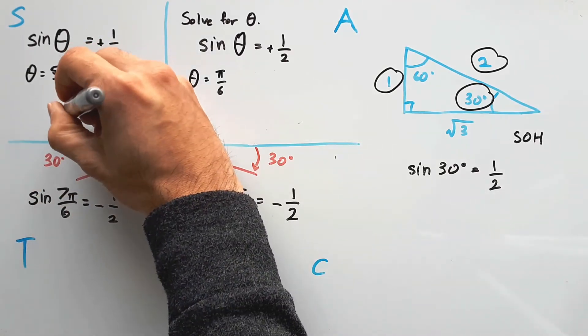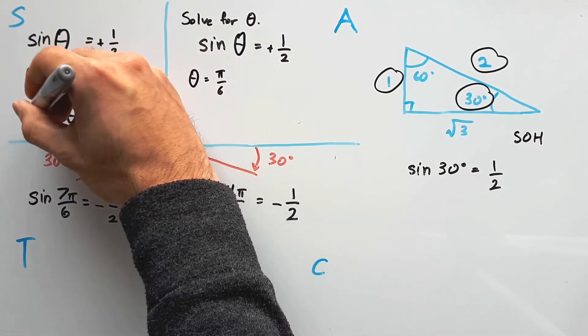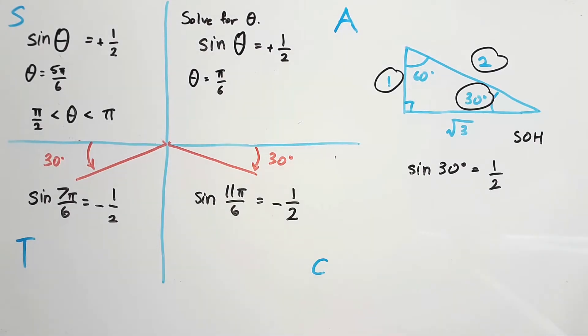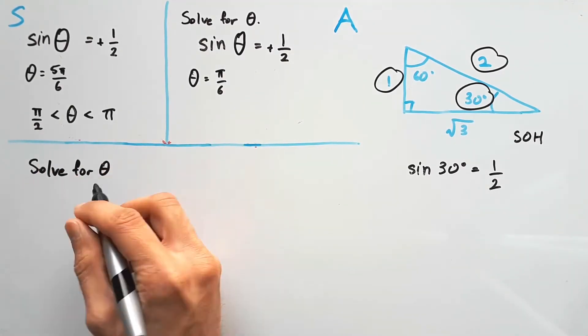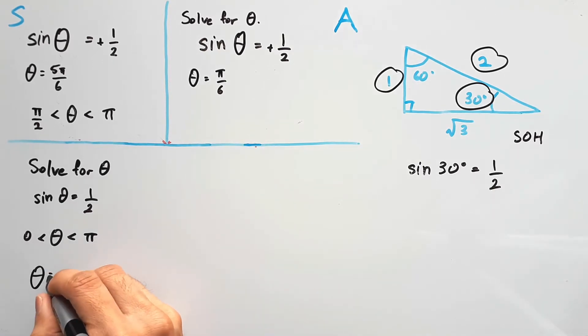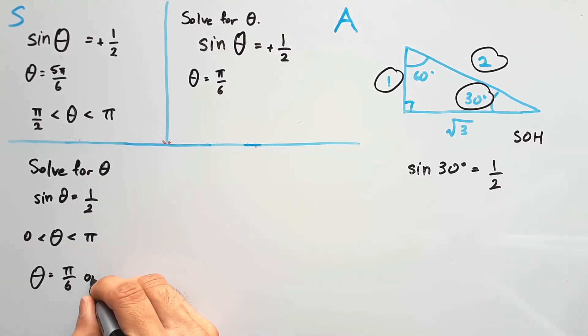It can't really be anything else because theta is between π/2 and π. But what if I generalized it a little more and said theta is between 0 and π? Well, based on our previous knowledge, there would be two answers, and you must include both, so your solution is theta equals π/6 or 5π/6.